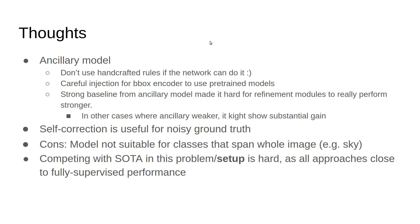In our early work, we tried to use a lot of handcrafted rules. That was the wrong path until we came up with the final ancillary model idea. Don't use handcrafted rules if the network can do it. The injection of the bounding box encoder after the encoder is very important to make use of pre-trained models. In this specific dataset and setup, the baseline itself was very strong, and this made it very hard for the refining modules to really give very strong results. In other cases where you have an initially ancillary model doing well, you'll probably see very good jumps in performance from the refining modules. Self-correction is very good when you have noisy ground truth—don't just deal with it as if everything is okay.